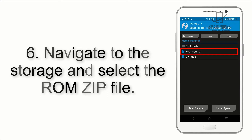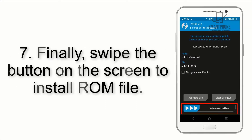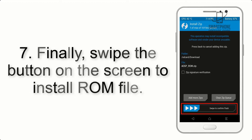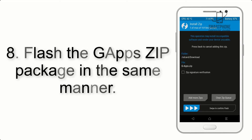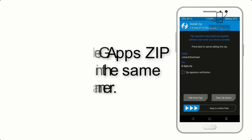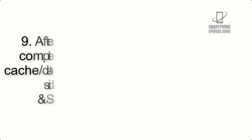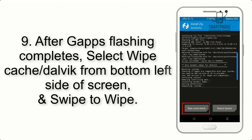Step 5: Go back to the recovery main screen and tap on the Install button. Step 6: Navigate to the storage and select the ROM zip file. Step 7: Swipe the button on the screen to install the ROM file. Step 8: Flash the GApps zip package in the same manner.